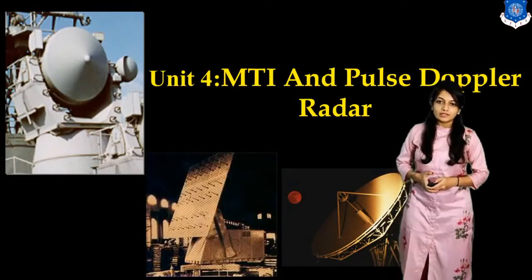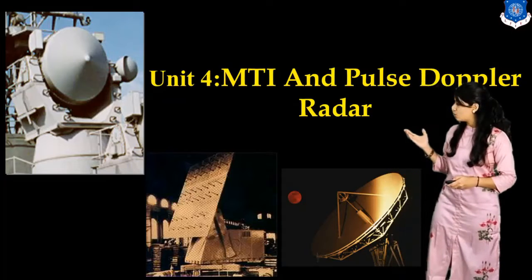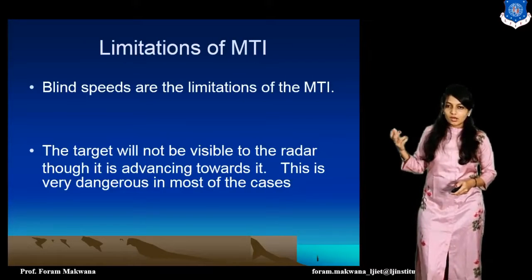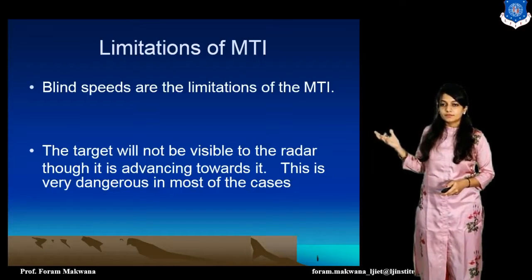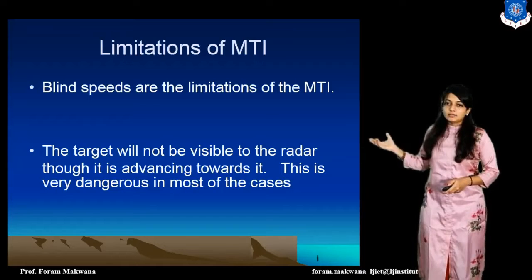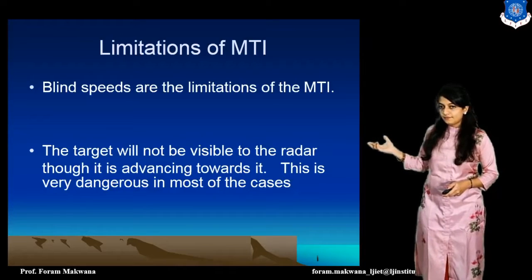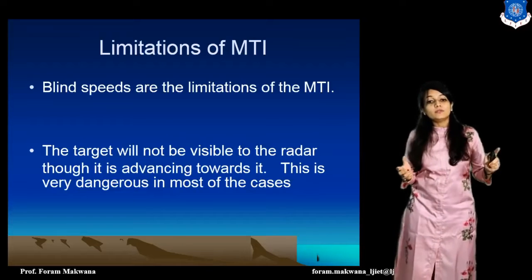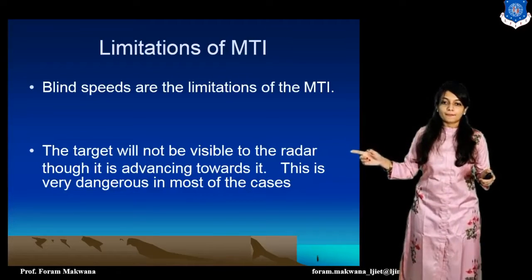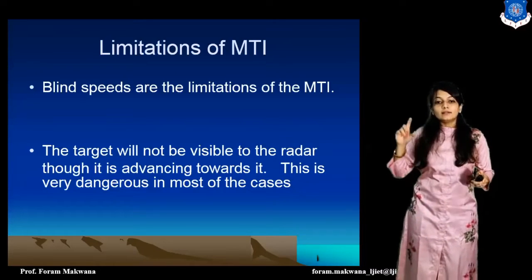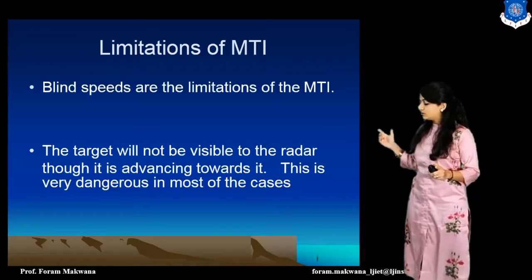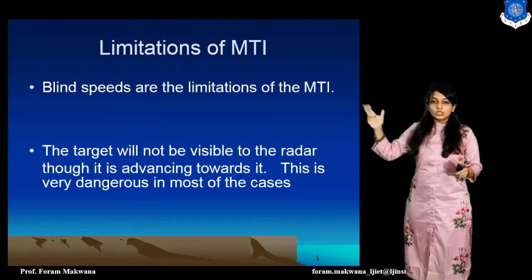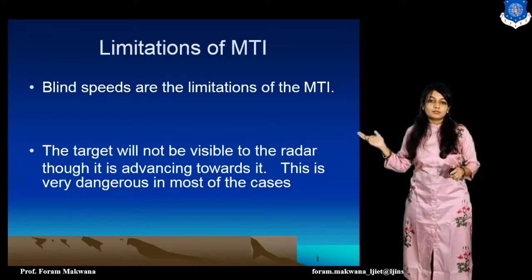In the last session we started Lead Number 4, that is MTI and the Pulse of the Radar. The next topic is: what are the limitations of MTI? The blind speeds are the limitations of MTI. A target will not be visible even if it is moving, because it is moving at the speed of the blind speed. This is a limitation because it is very dangerous in most cases.